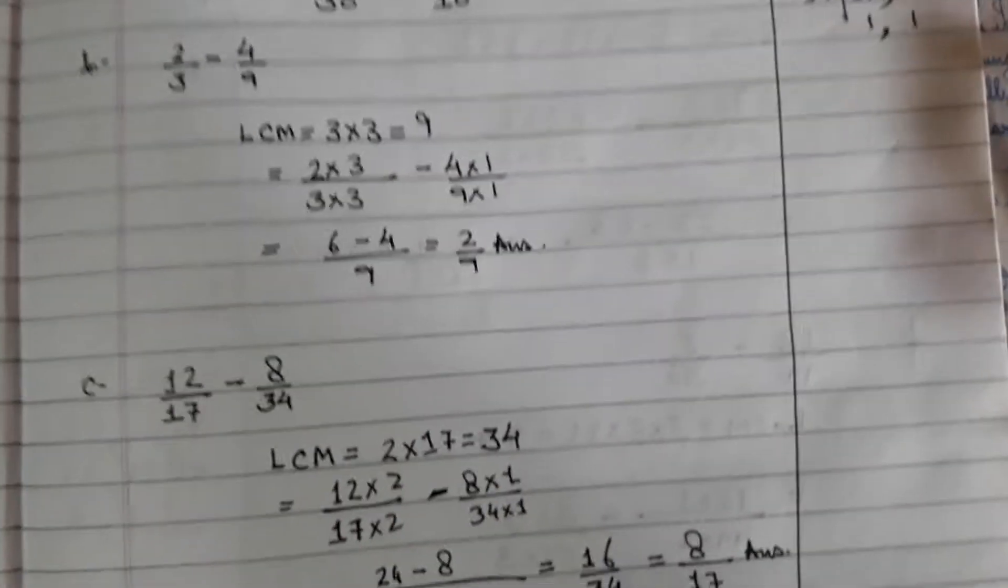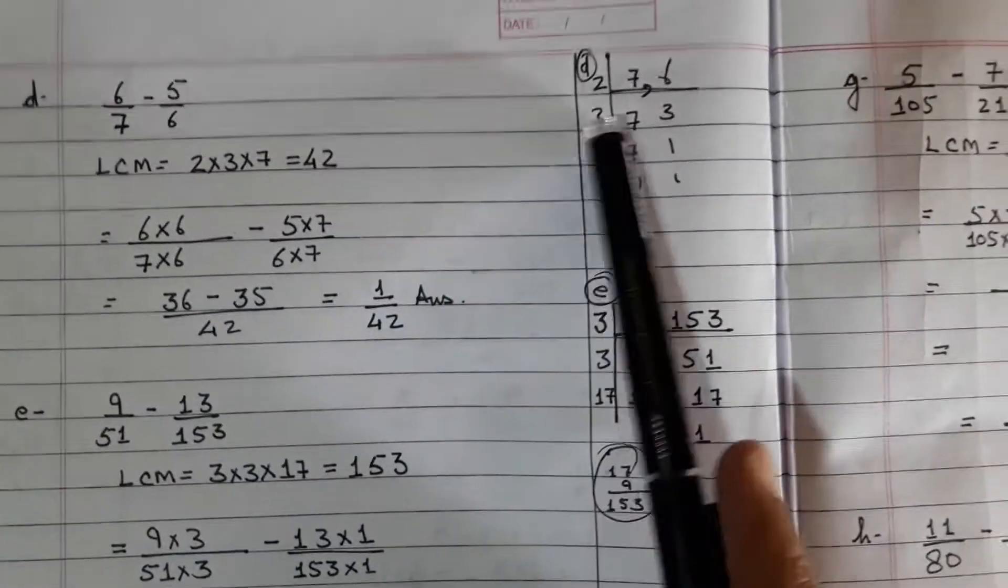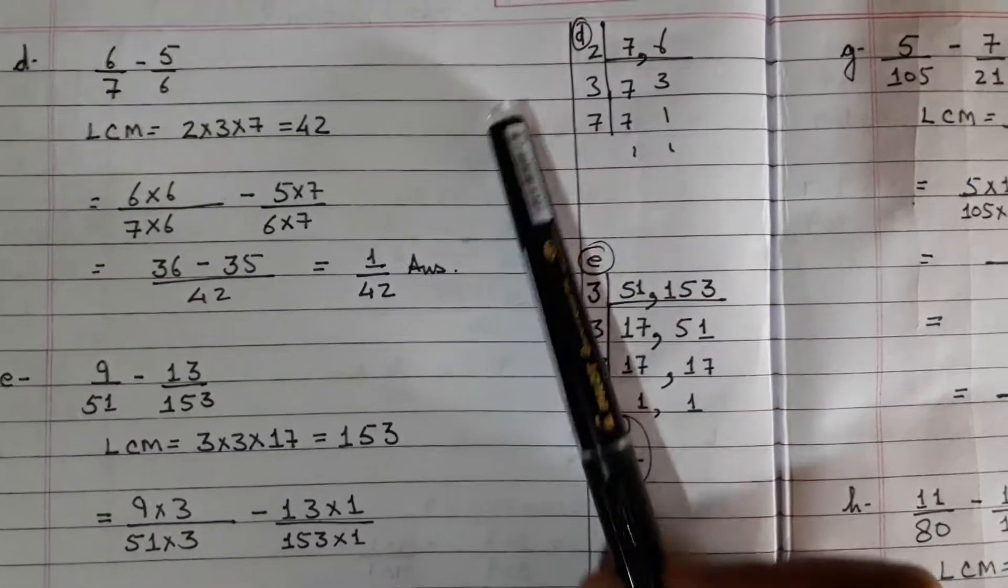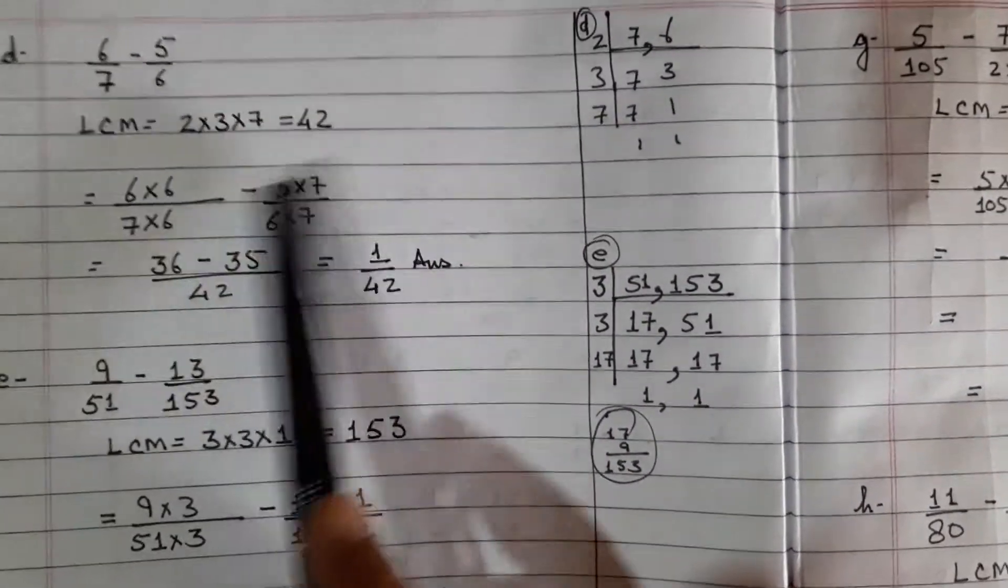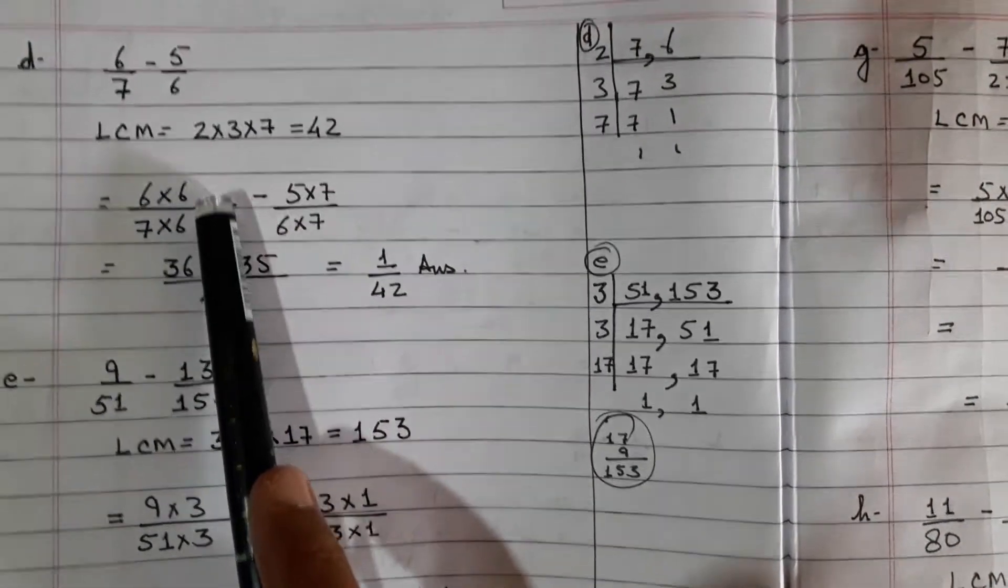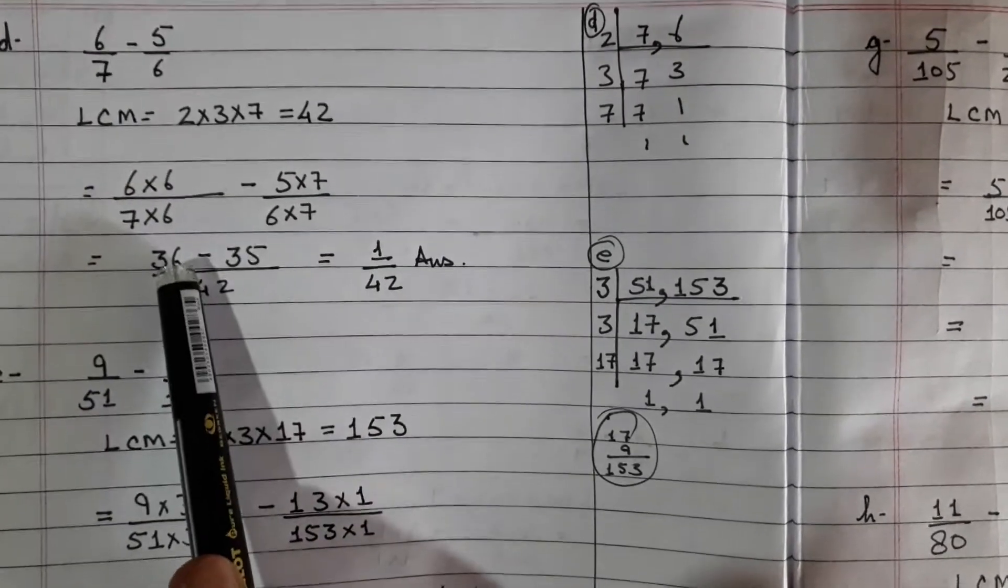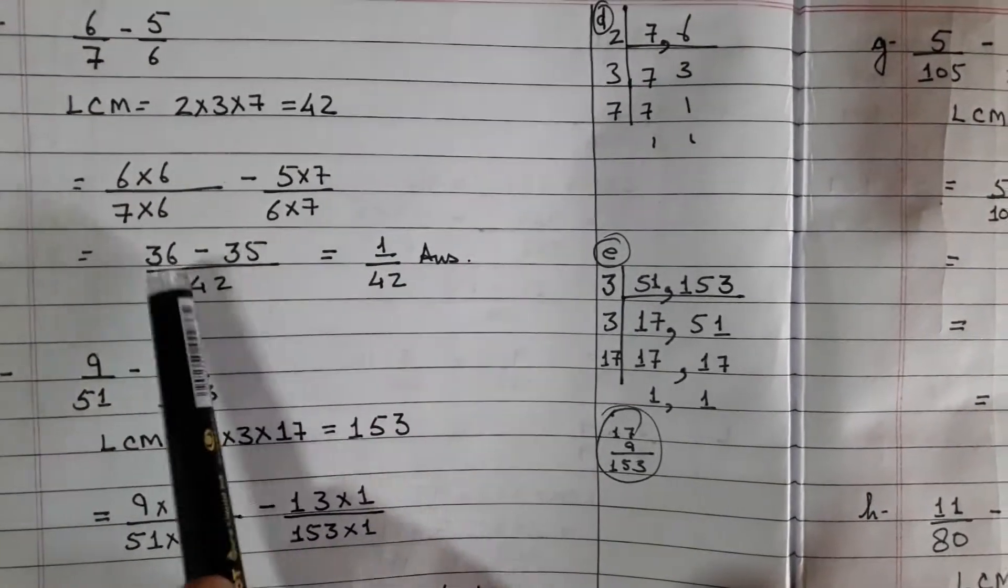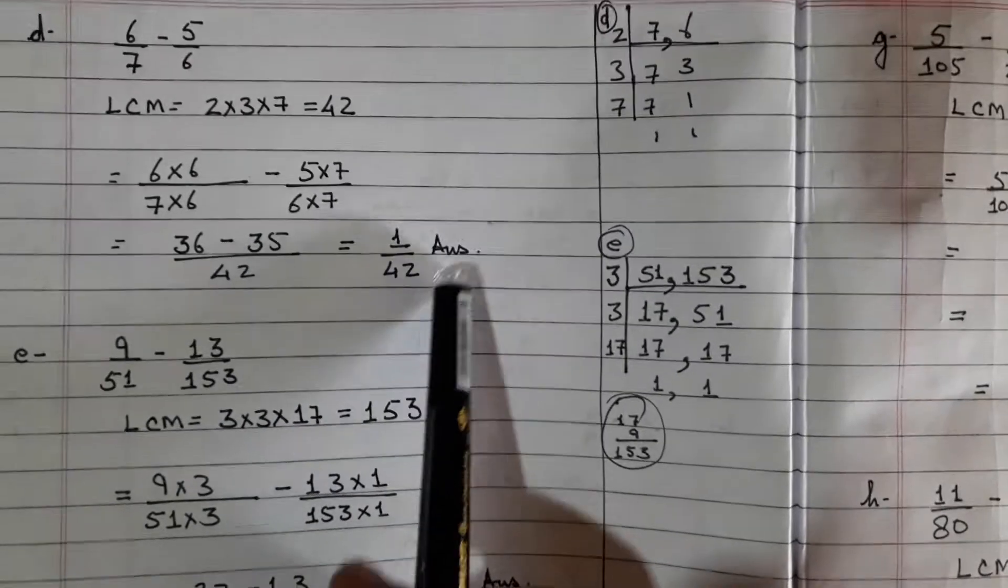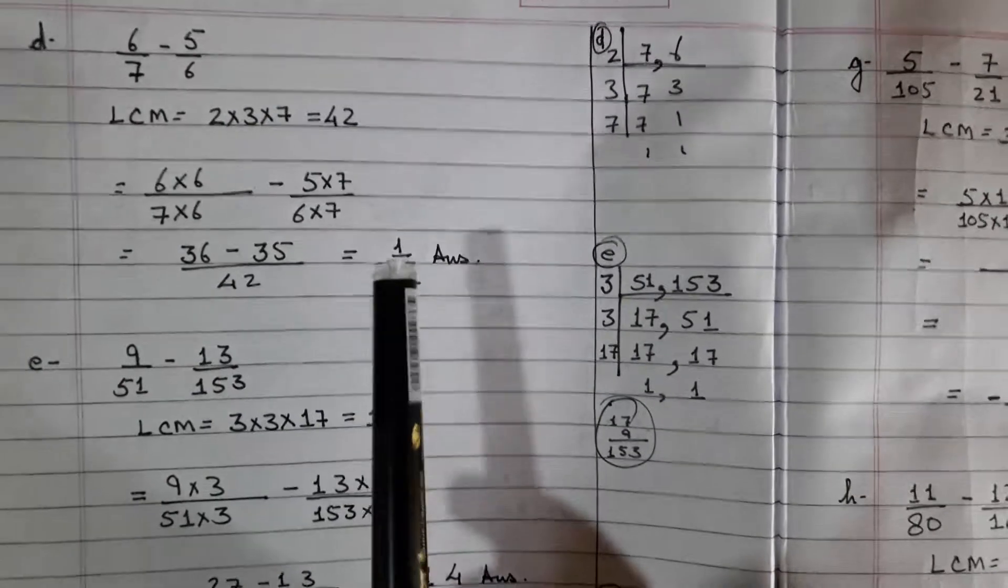Let us look at the other one. 6 over 7 minus 5 by 6. The LCM of 7 and 6 is 42. 7×6 will be 42, 6×7 will be 42. The numerator also will be multiplied by the same number. 6×6 is 36 and 5×7 is 35. 36 minus 35, 1 over 42 is your answer. Easy sums, I think. All of you would have got them right.